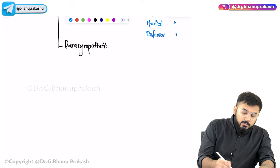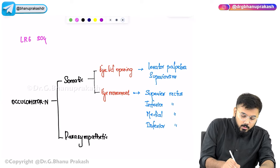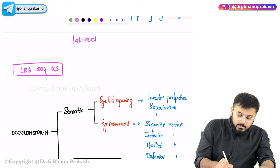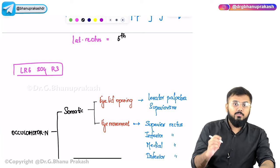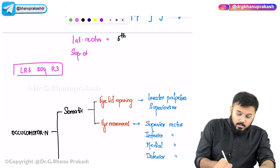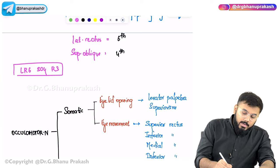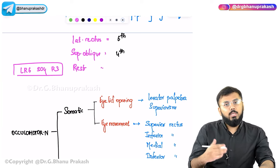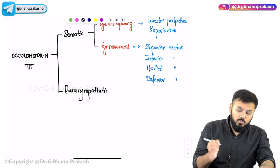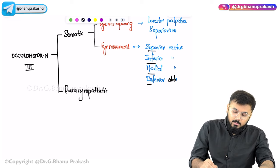LR6 SO4 R3: LR6 means lateral rectus is supplied by the sixth cranial nerve (abducens). SO4 means superior oblique is supplied by the fourth cranial nerve (trochlear). R3 means the rest — superior rectus, inferior rectus, medial rectus, and inferior oblique — are supplied by the third cranial nerve, the oculomotor nerve.